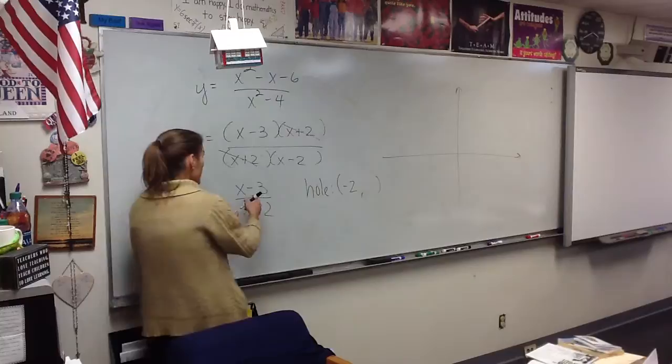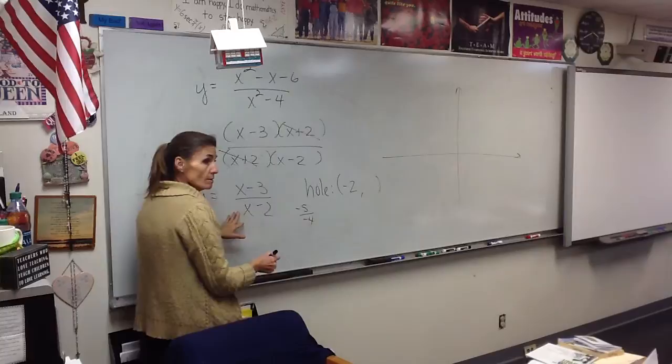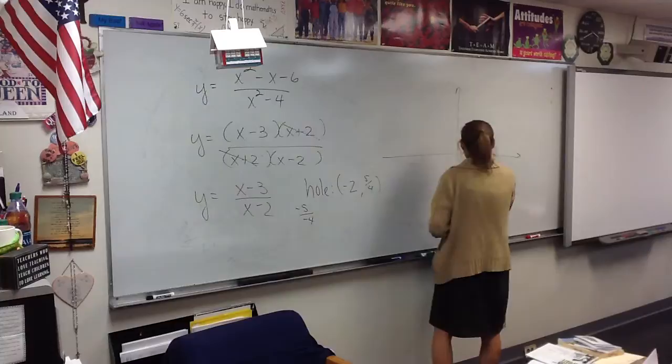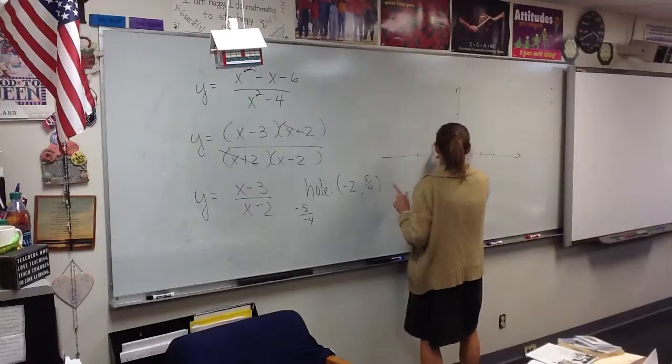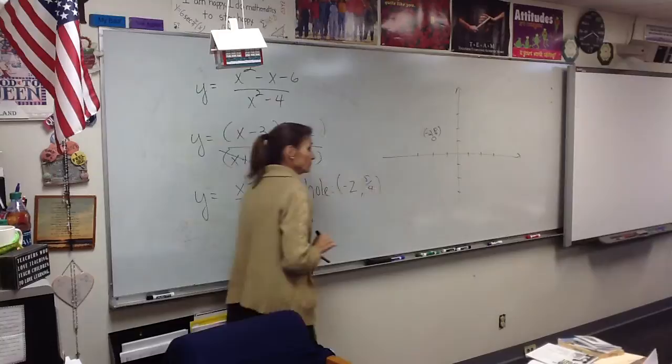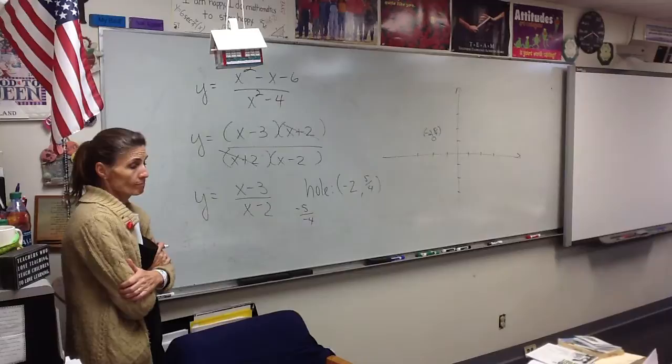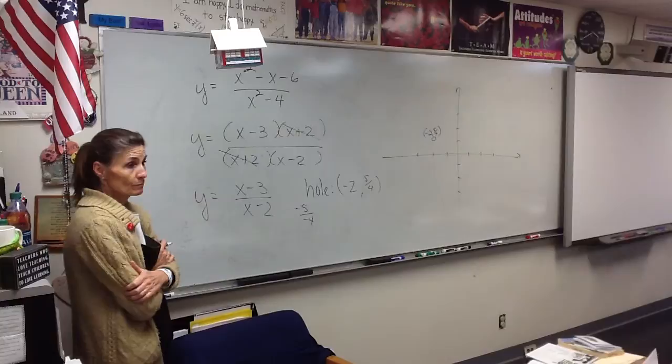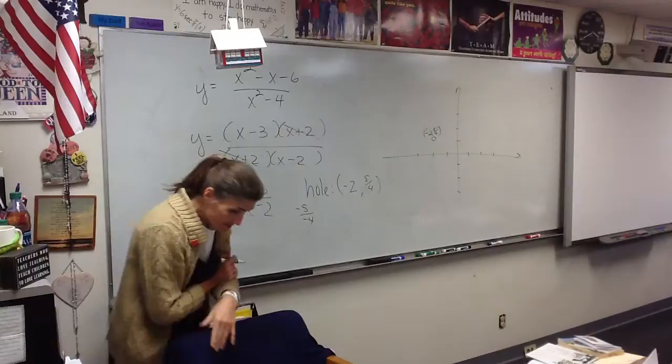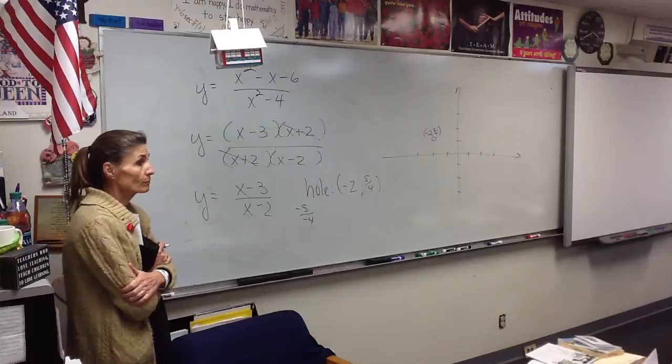How do you find the y part of the hole? Put it right here. So, if I put in negative two, I would get negative five over negative four, which is five fourths. So, I'm going to go ahead and plot that negative two, five fourths. There it is. Five fourths is a little bit more than one. So, that's why it's where it is. All right.